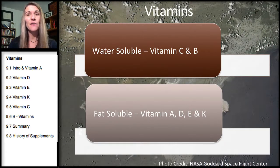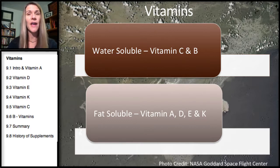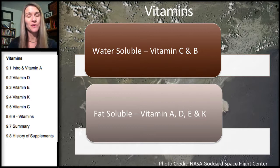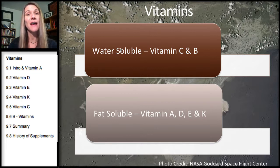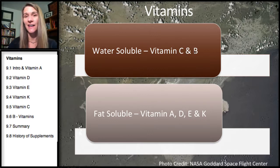First, we'll introduce the different categories of vitamins. Remember, micronutrients are both vitamins and minerals. Our vitamins come in both a water-soluble and fat-soluble group. Water-soluble vitamins are vitamins C and B, whereas the fat-soluble vitamins are A, D, E, and K.